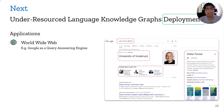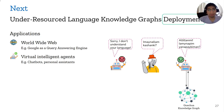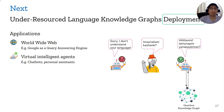Personal assistants like Siri and Alexa do not currently support under-resourced languages because they don't have enough structured knowledge to build those chatbots. But if a chatbot is built on top of a language-specific knowledge graph, it could start to understand the language and begin to speak it.